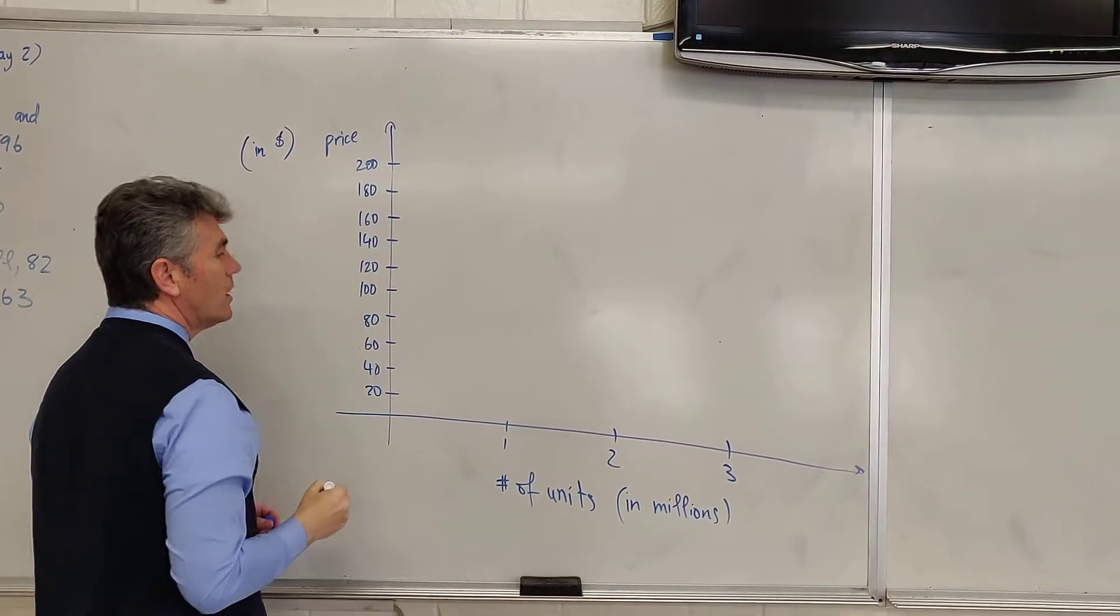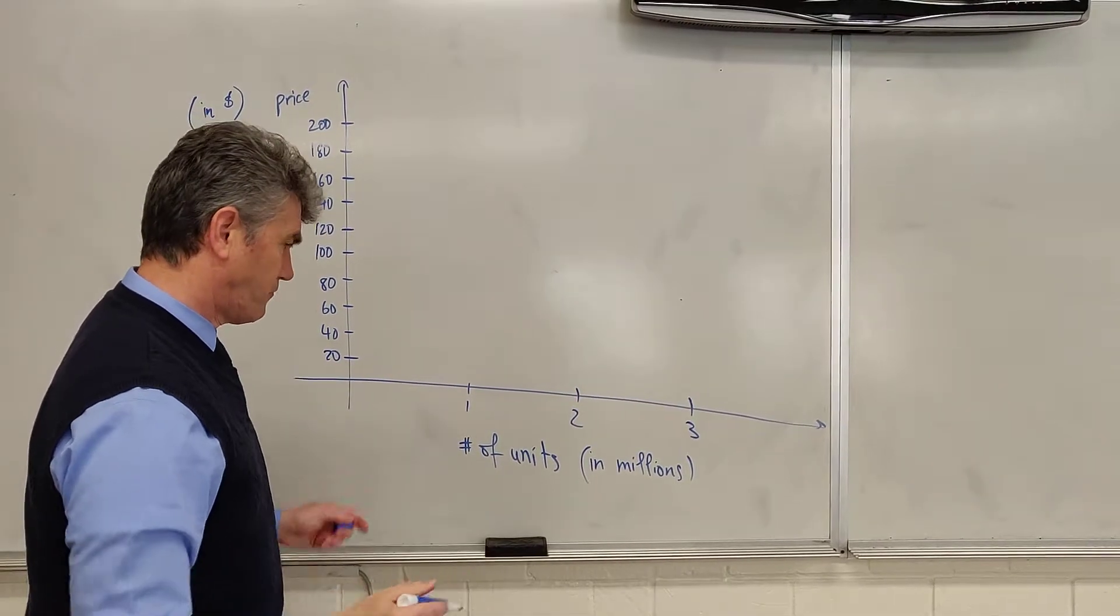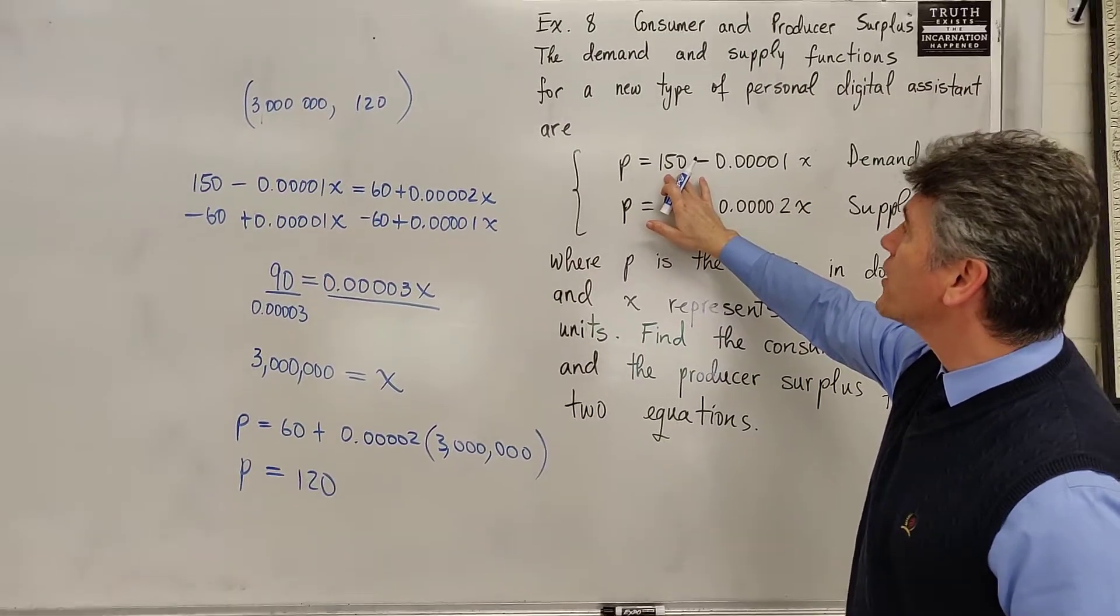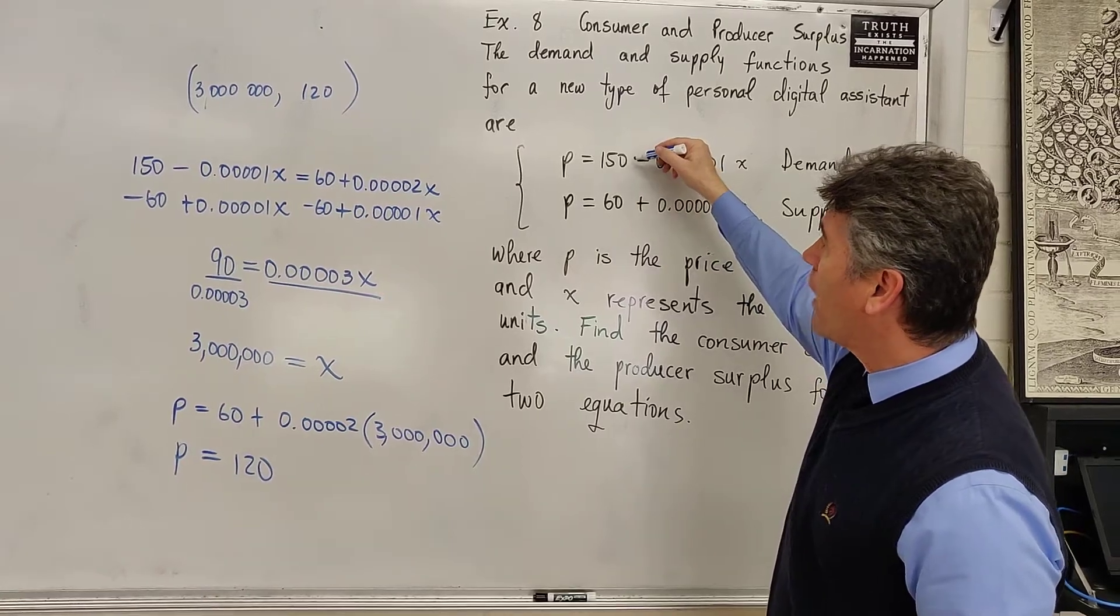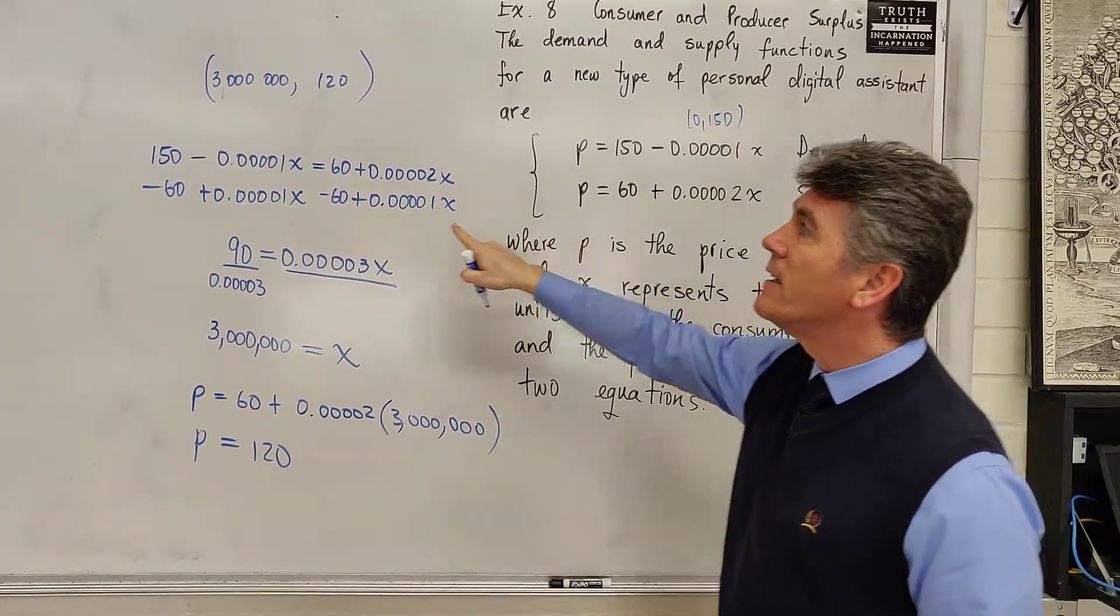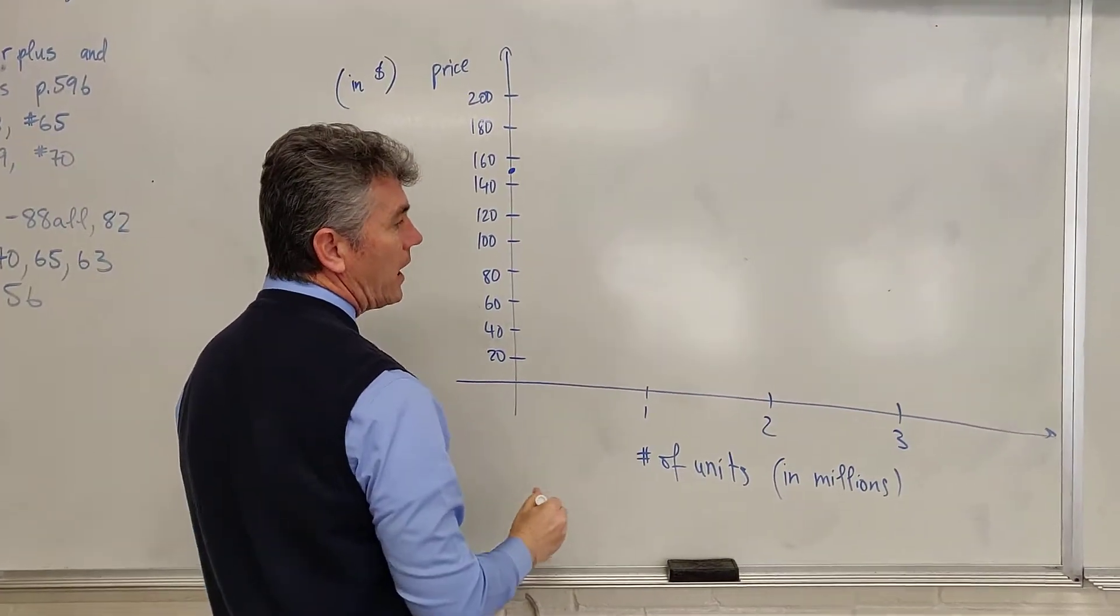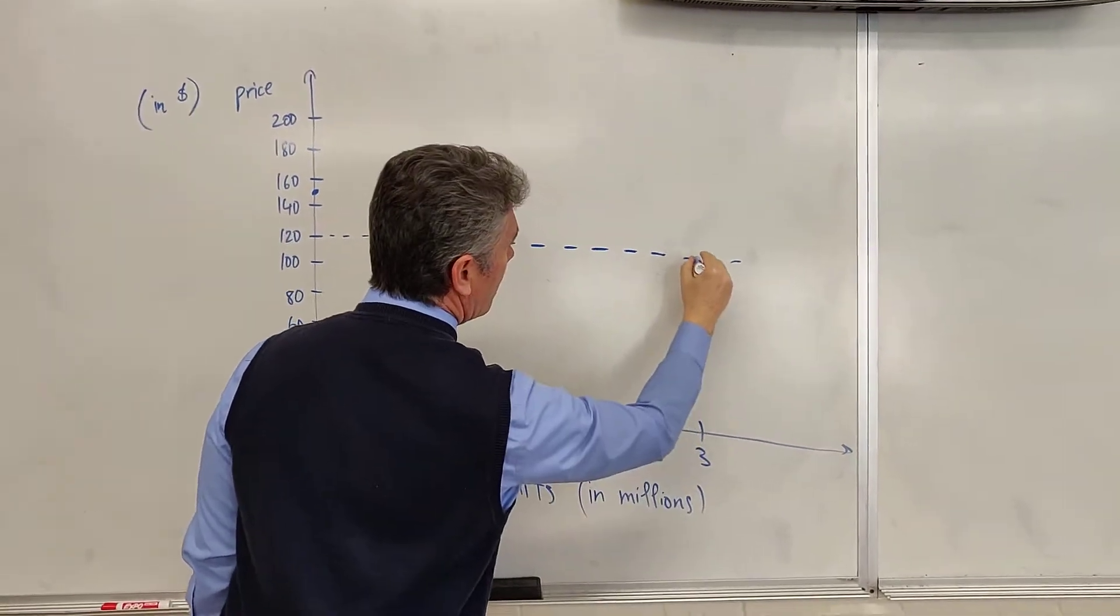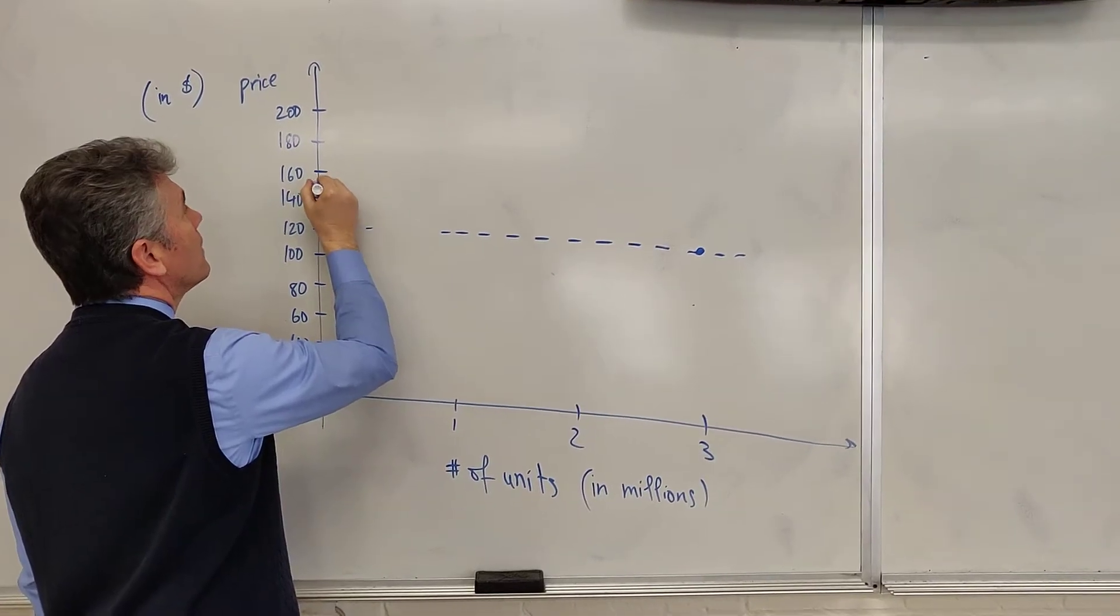We're going to start by plotting the demand curve. If you look at the demand curve, we notice that its y-intercept is at (0, 150). I'm going to plot the point (0, 150) and (3 million, 120). To the best of my ability, I'm going to now draw the demand curve.